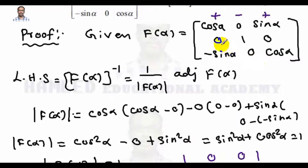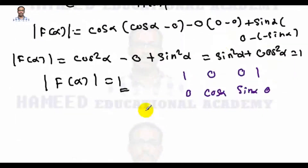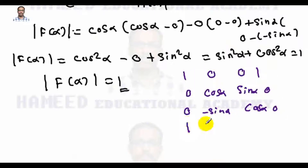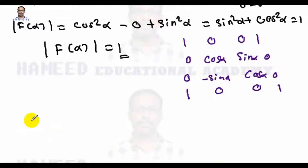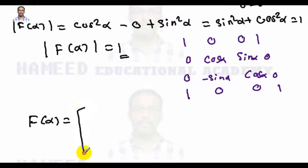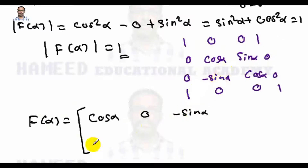So we write the adjugate: [cos α, 0, sin α; 0, 1, 0; -sin α, 0, cos α]. You can verify each element. So what is f(α) inverse? We have one over determinant times adj f(α).